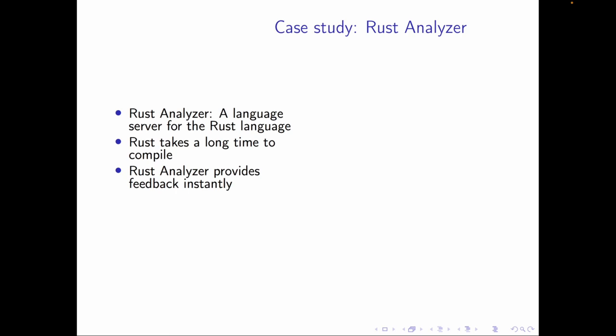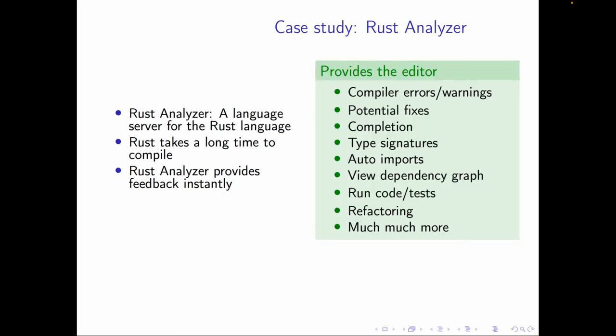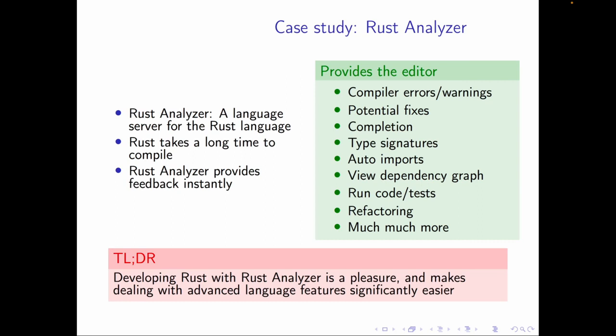Let's do a quick case study on LSP with Rust Analyzer — a language server for Rust. Rust takes a really long time to compile, but the compiler gives you fantastic feedback, and Rust has a lot of advanced language features, so that feedback is super important. Rust Analyzer gives you that feedback instantly: code completion, fixes, compiler errors, warnings, type signatures, and help managing lifetimes and other advanced features — all without waiting for compilation. Developing with Rust Analyzer is orders of magnitude easier than writing Rust straight.